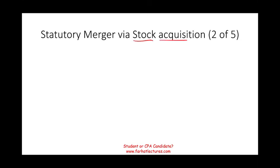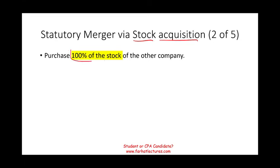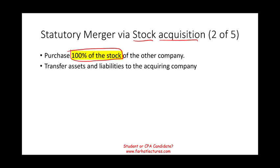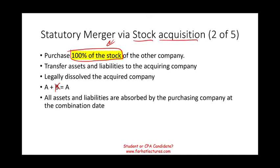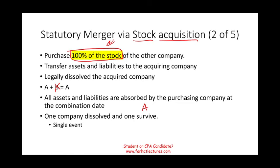The second type is statutory merger via stock acquisition. Here you purchase 100% of the stock — not 99%, not 98%, but 100%. You then transfer their assets and liabilities to your company, and you legally dissolve the other company. Simply put, A plus B: if A is buying B, B is gone and what survives is A. All assets and liabilities are absorbed by the purchasing company at the combination date. It's also a single event, and company B will have zero balances, with its accounts closed out at the end.